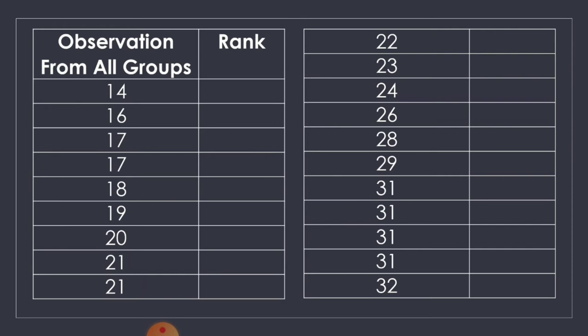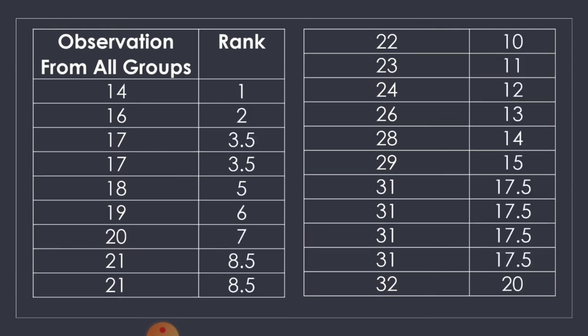Then, identify their corresponding ranks. So 14 is rank 1, 16 is rank 2. We have two 17s — they share ranks 3 and 4, so we get the mean: 3 plus 4 equals 7, divided by 2, that is 3.5. Then 18 is rank 5, 19 is rank 6, 20 is rank 7. We also have two 21s — they share ranks 8 and 9, so 8 plus 9 equals 17, divided by 2, that is 8.5.